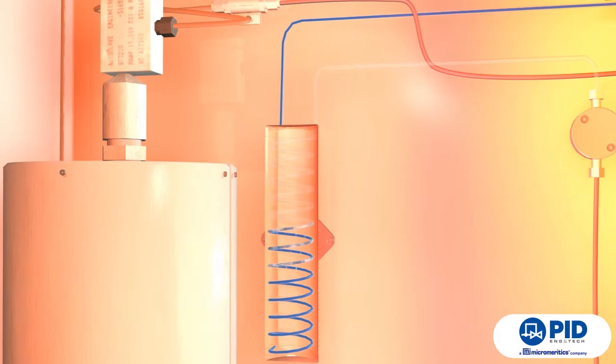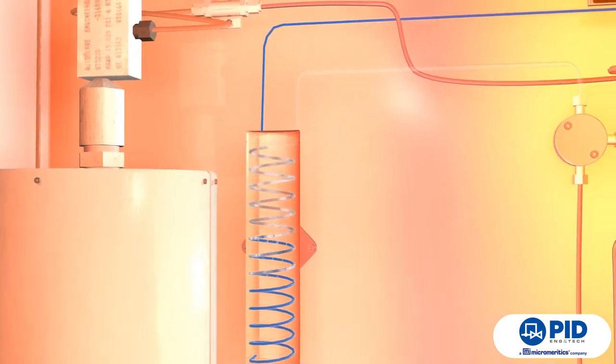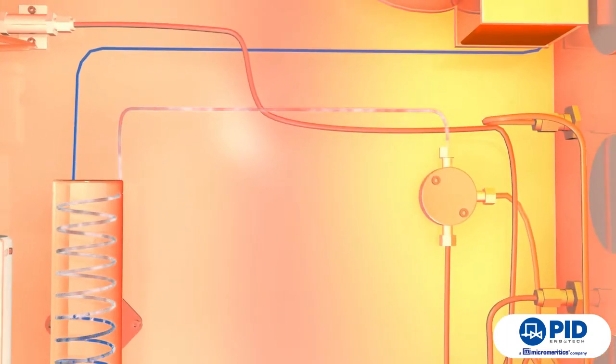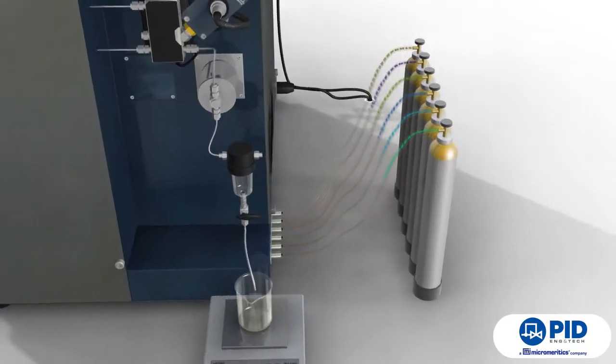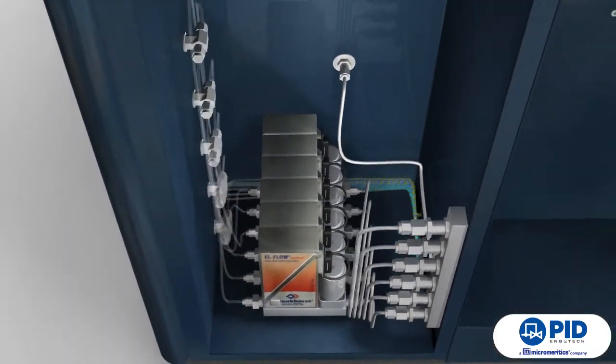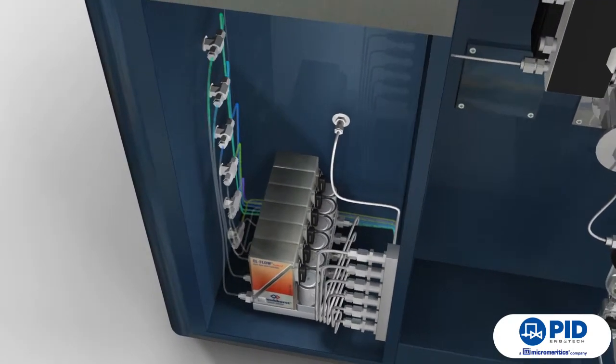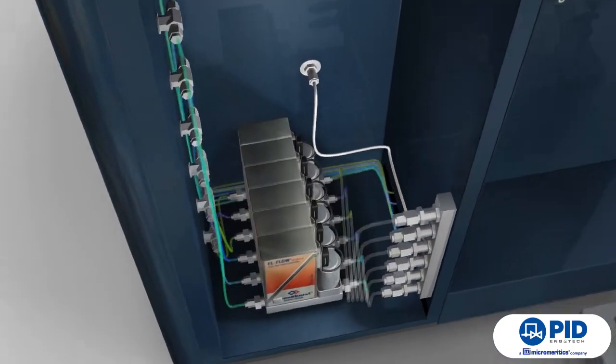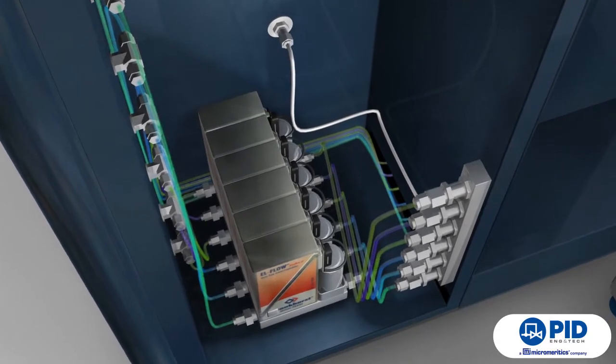The liquid becomes a vapor once it passes through and is heated by the liquid evaporator. A series of mass flow controllers releases gas reactants into the heat exchange zone to bring them to the same temperature as the vapor.